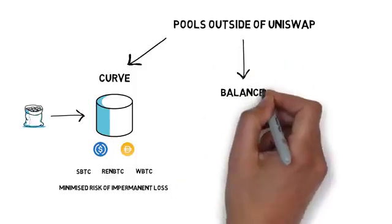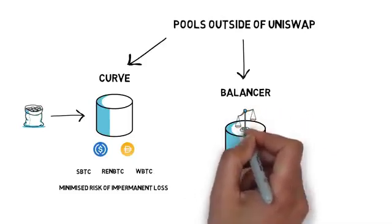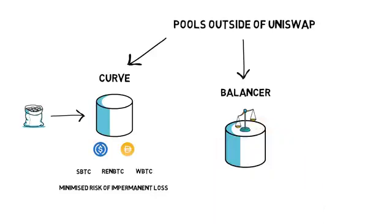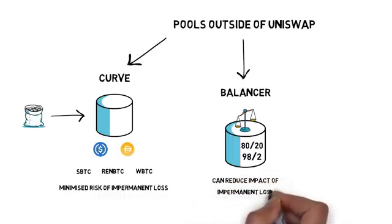Another example is Balancer, which offers pools with arbitrary weights outside of the standard 50-50 weighted model. This means that if an LP wants to maintain high exposure to a certain asset, they can participate in a pool where one token has a much higher weight than the other, such as an 80-20 or even 98-2 pool. This can also reduce the impact of impermanent loss depending on the weight in the pool — the higher the weight of a token, the lesser the difference between holding it and providing liquidity in it becomes.